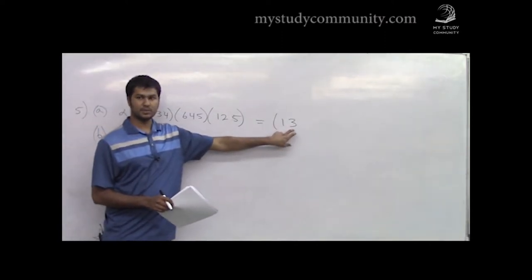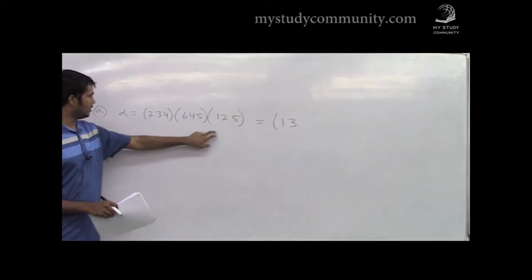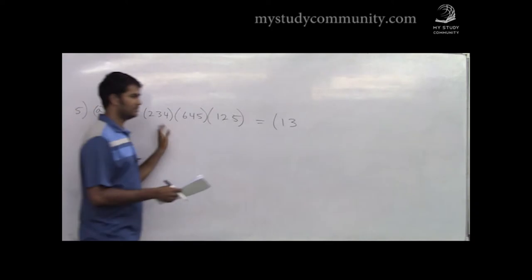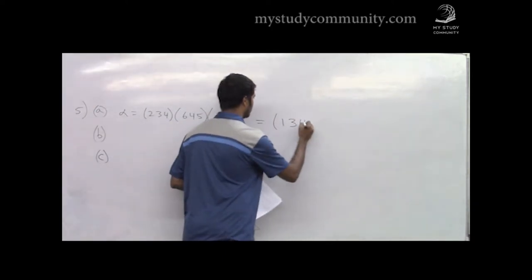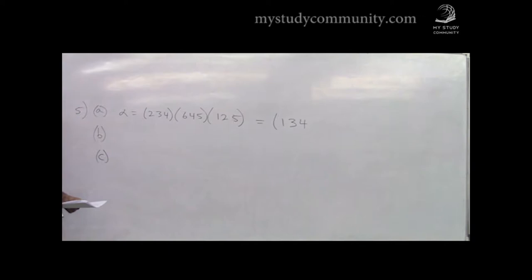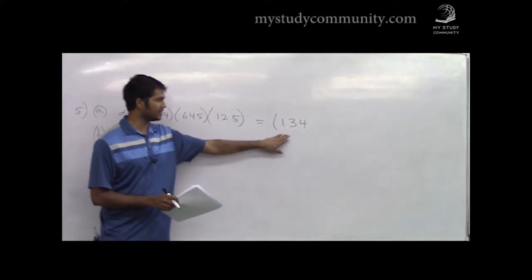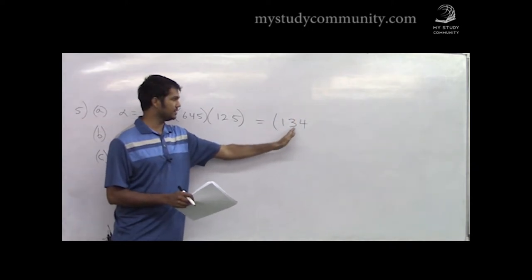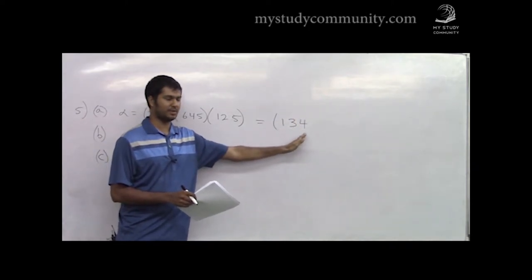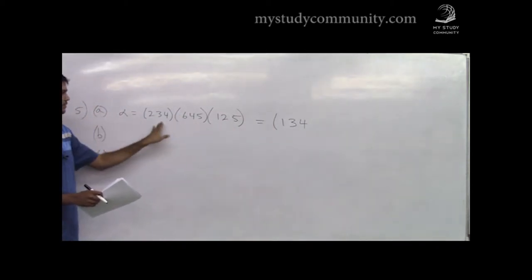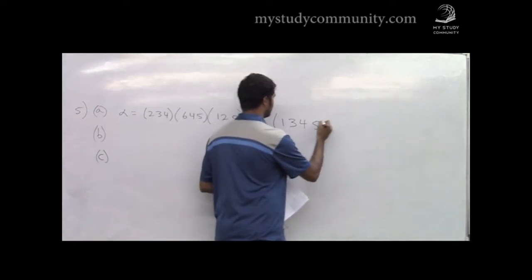Now we look at 3. There's no 3 in the first two cycles; in the next one, 3 maps to 4. So alpha maps 3 to 4. Continuing, 4 maps to 5 and there's no 5 after, so 4 maps to 5 overall. Then 5 goes to 1 and the cycle closes. So we have the cycle (1 3 4 5).